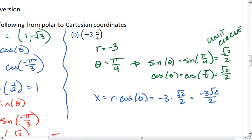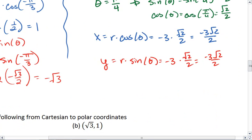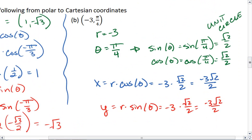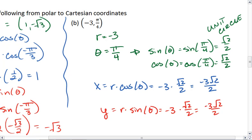My y, then, is r times sine theta, negative 3 times root 2 over 2, negative 3 root 2 over 2. Which means that in polar coordinates, this is equal to negative 3 root 2 over 2, comma, negative 3 root 2 over 2 in Cartesian coordinates.